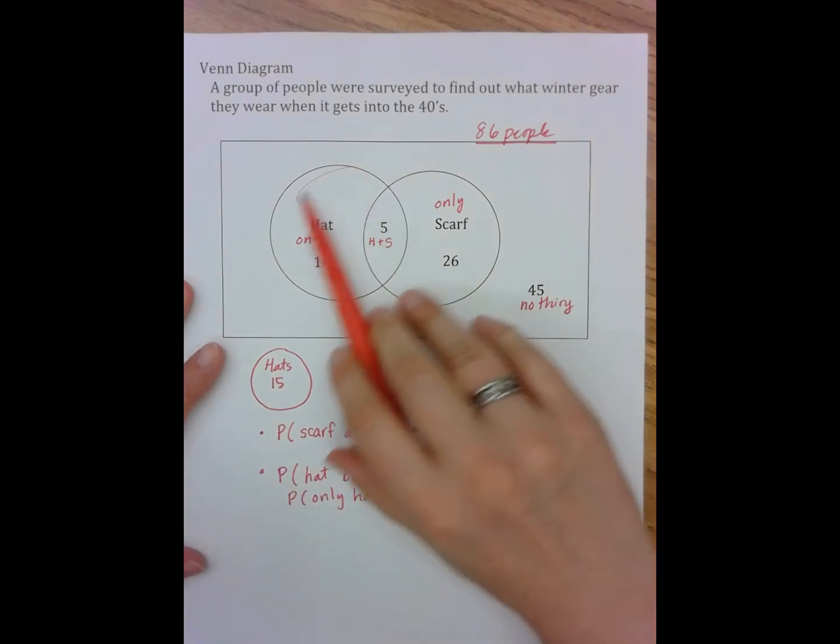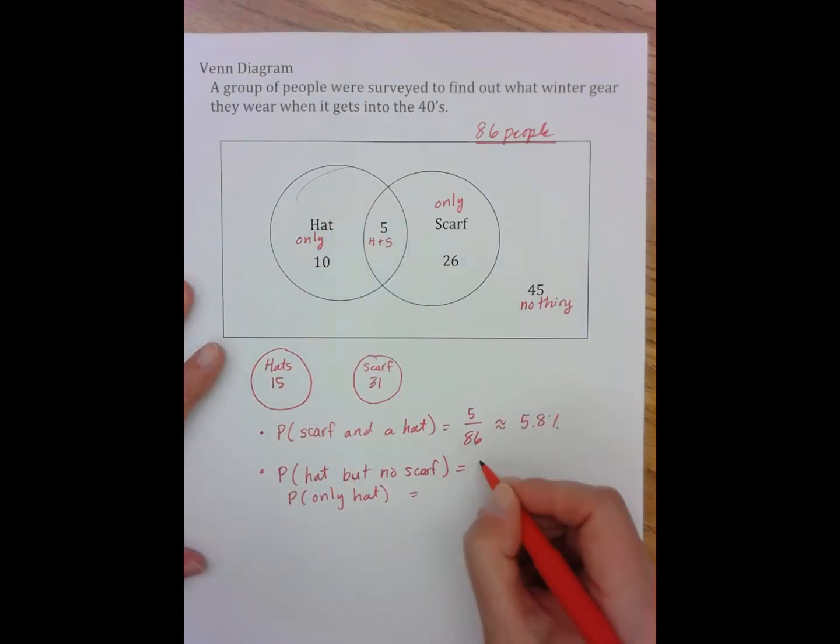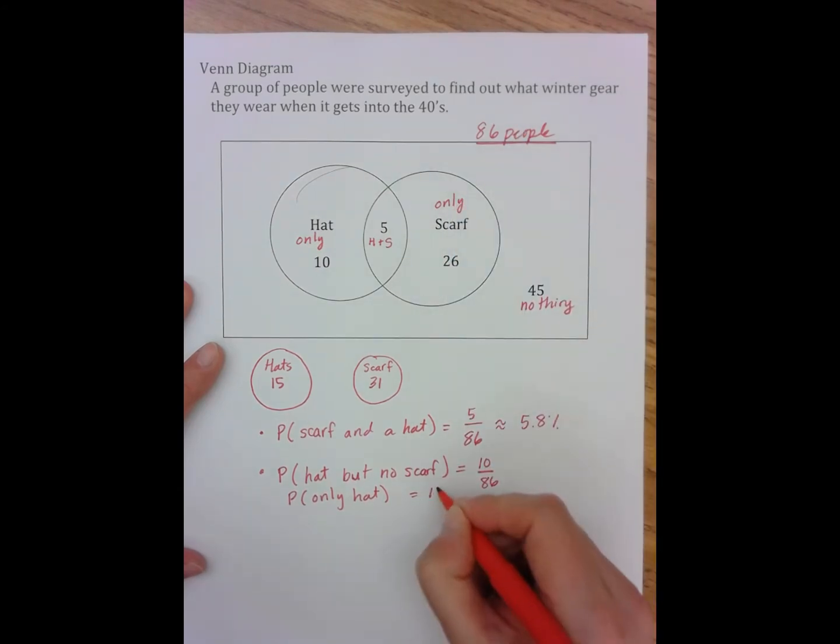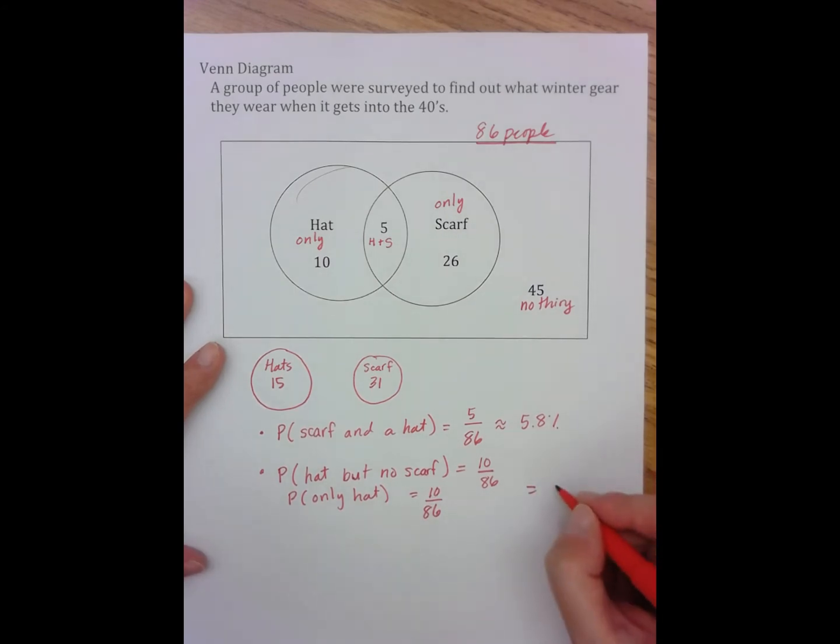Either way, those people are sitting here and it's 10 of them, out of, again, all of the people, 86, which gives us a probability of about 12%. Oh, and I should - there we go. I did on the other one, just didn't on this one.